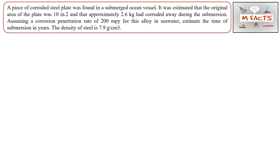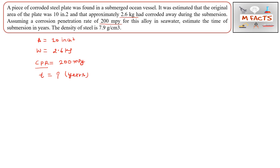The question: a piece of corroded steel plate was found submerged in the ocean. It was estimated that the original area of the plate was 10 inch squared, and approximately 2.6 kg had corroded away. Assuming a corrosion penetration rate of 200 mils per year for this alloy in sea water, estimate the time of submergence in years. The density of steel is given as 7.9 g/cm³.